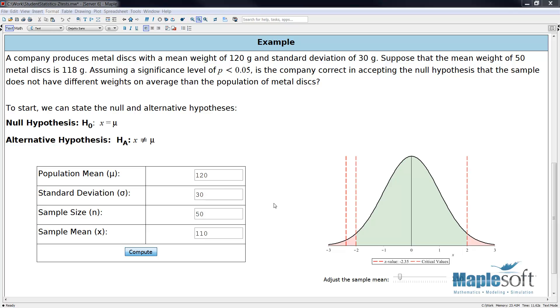Down here I've put together an application where we can test this. We can input our population mean of 120, standard deviation of 30, sample size of 50, and sample mean of 118. If we put all this in, we can see in this plot that this results in a z-value of -0.47, which is well within our two standard deviation critical range.